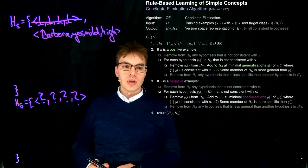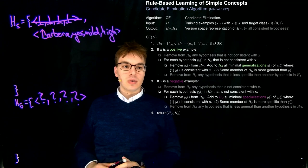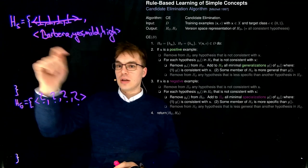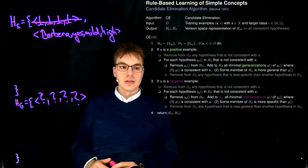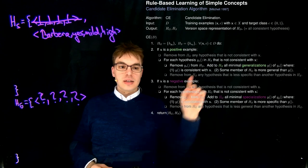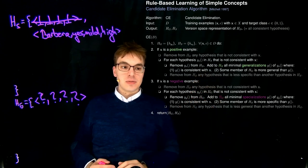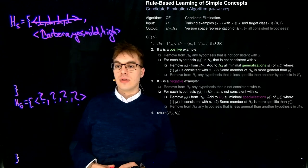Looking at the second condition: some member of HG is more general than this hypothesis, and yes, this one is clearly more general with all the wild cards. Next, we remove from HS any hypothesis that is less specific than any other hypothesis in HS — we only have one, so that's fine.